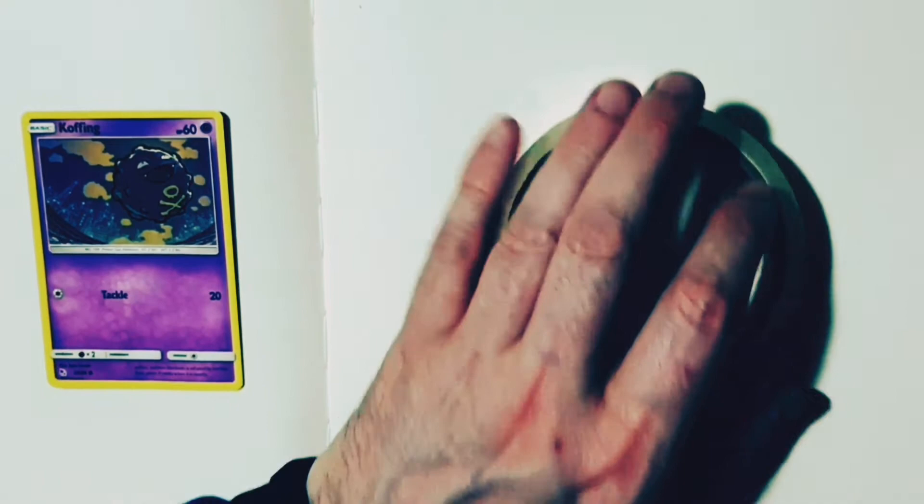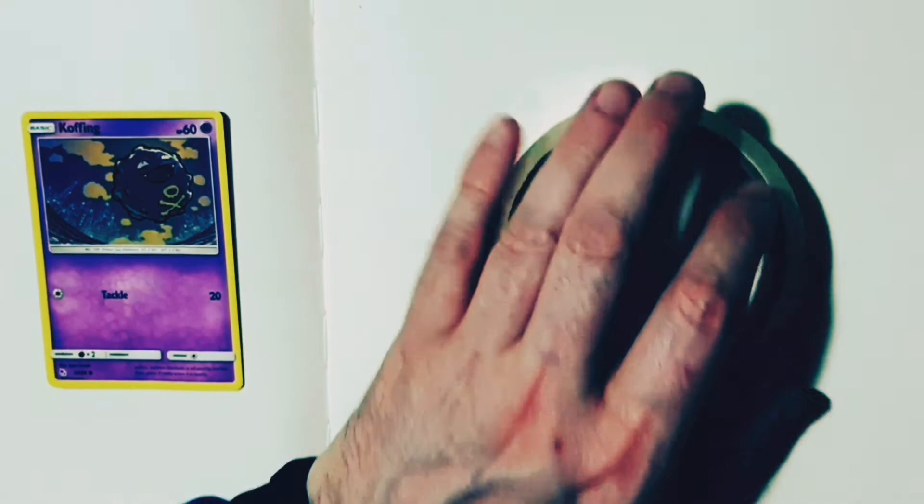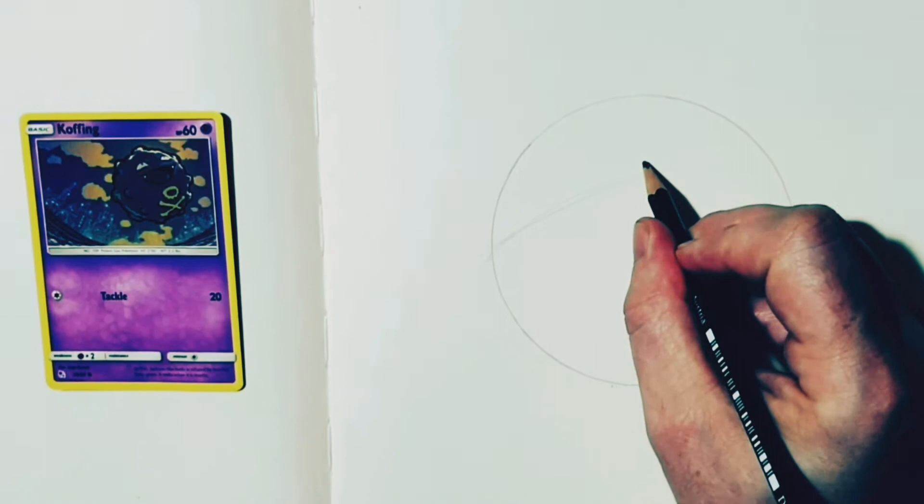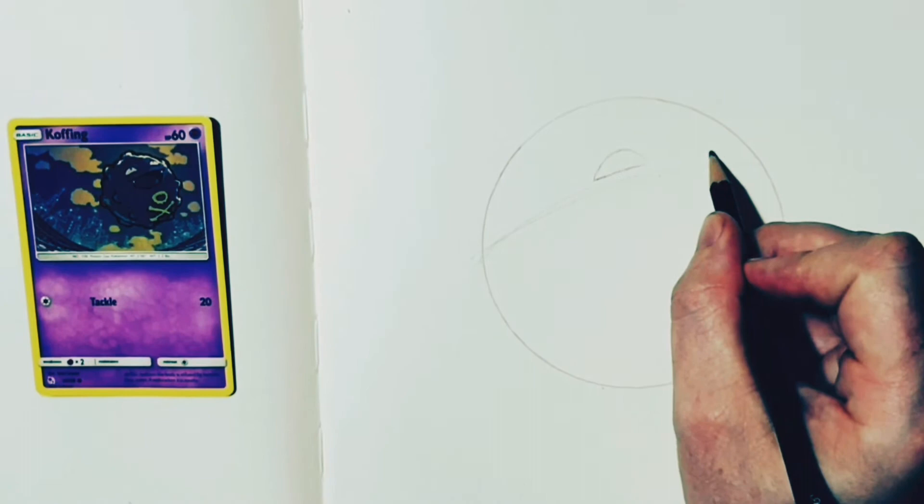Like always on this channel, we start off with a circle. I'm drawing around a sellotape there, and then circular, you can draw around it's quite easy. Now I draw the line across like this and don't forget it is curved because Koffing is a ball, so it is kind of drawing a general ball.